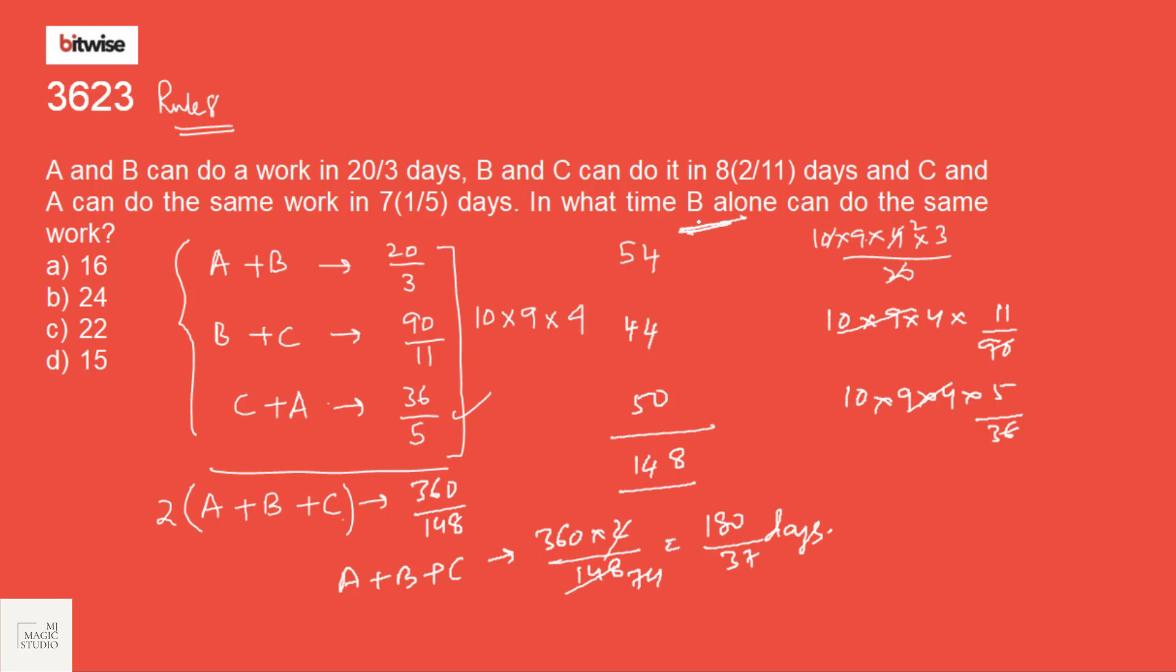Now, we need to know in what time B alone can do the work. So from A plus B plus C, if I subtract C plus A, I will get the value of B. So B alone will take 180 by 37 into 36 by 5 by 180 by 37 minus 36 by 5. That would be 180 into 36 by 432. And this should be equals to 15. B alone will do the work in 15 days.